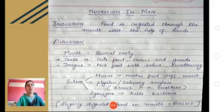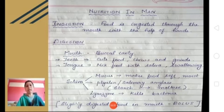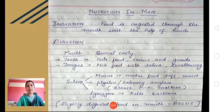Now let us begin with the process of nutrition. The first process is ingestion, where food is taken inside the mouth with the help of our hands. The next step is digestion, which begins inside the mouth or buccal cavity itself. The buccal cavity contains teeth which help in cutting, chewing, and grinding the food. The tongue along with taste buds helps in mixing the food with saliva and also swallowing the food. Saliva is secreted by the three types of salivary glands and contains three substances.